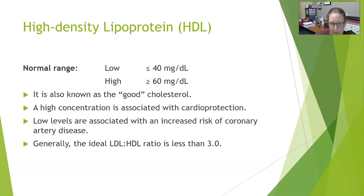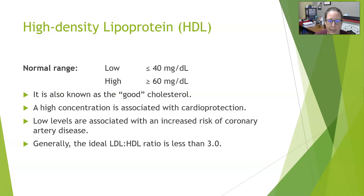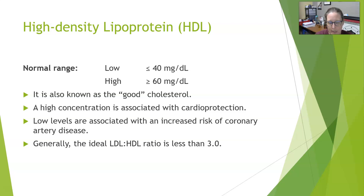High-density lipoprotein, or HDL: a low level is less than 40 milligrams per deciliter, and a high level is greater than 60 milligrams per deciliter. HDL is known as the good cholesterol because it scavenges cholesterol from the periphery and takes it to the liver for disposal. A low HDL puts a person at higher risk for coronary artery disease, while a level above 60 to 65 milligrams per deciliter is desirable and protective. The ideal LDL to HDL ratio is less than 3.0.